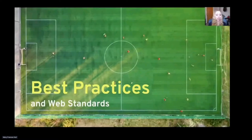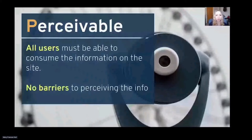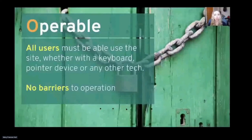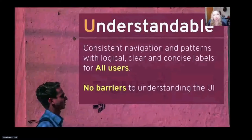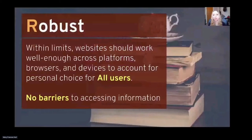We start with some best practices and web standards to help guide us. You'll often hear the acronym POUR to explain the four principles of accessibility — but truthfully, these principles should also be considered the four principles of usability. Perceivable: a user must be able to consume or perceive — visually or audibly — all pertinent information, regardless of device or technology. Operable: a user must be able to interact with the site and its information. Understandable: the information must be clear and understandable, including things like consistent navigation patterns with logical, clear, and concise labels. Robust: websites should work well across platforms, browsers, and devices to account for personal choice of all users.